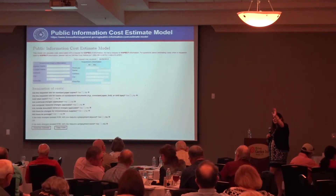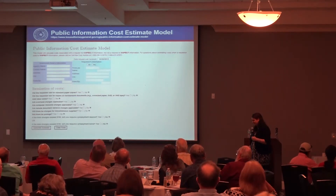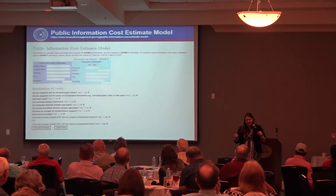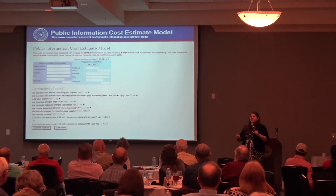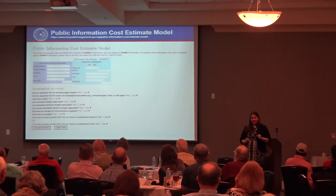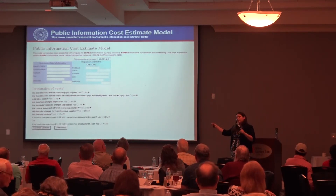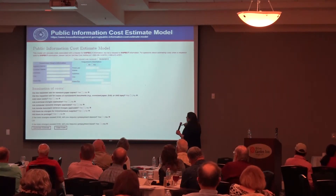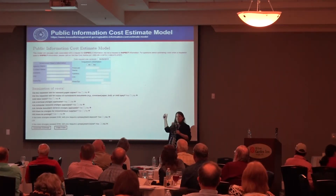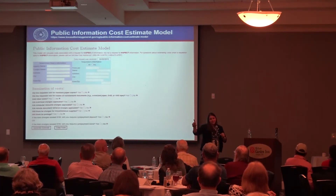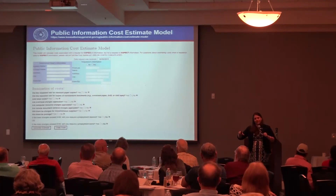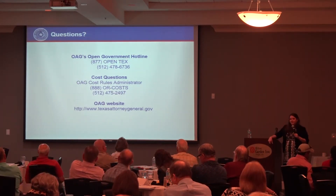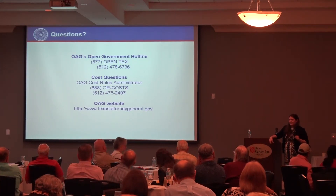On the topic of costs: if you have a large request and know you can charge, my short advice is do a sample test, get a good idea of the numbers, and go to our website under the open government tab to find the Public Information Cost Estimate Model. It's essentially a fill-in-the-blank tool that will generate the letter the statute requires you to send to the requester when the cost exceeds $40. We also have a specific hotline for cost questions.